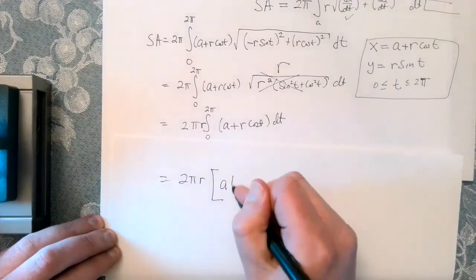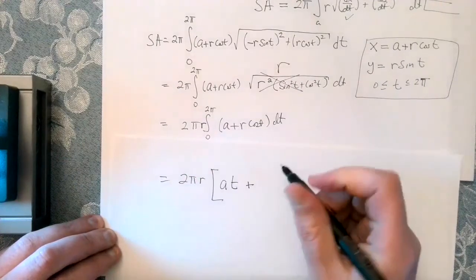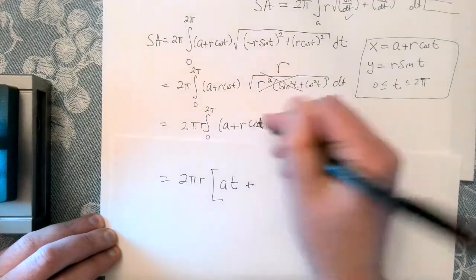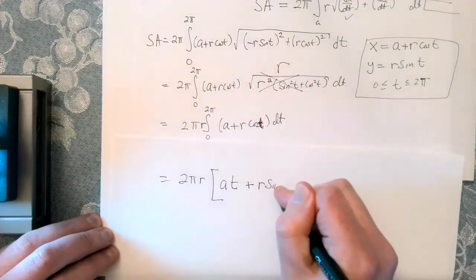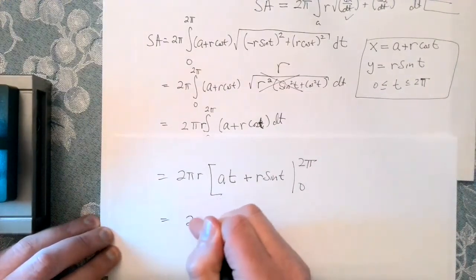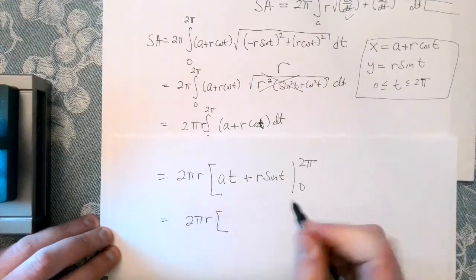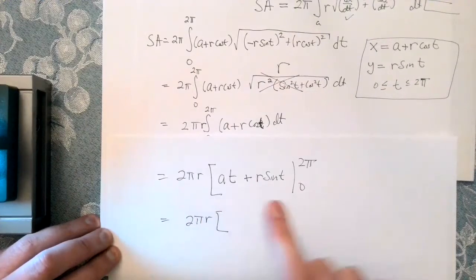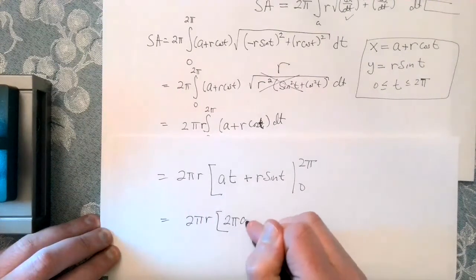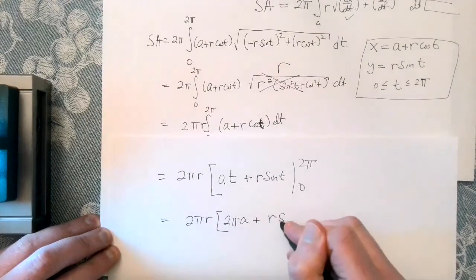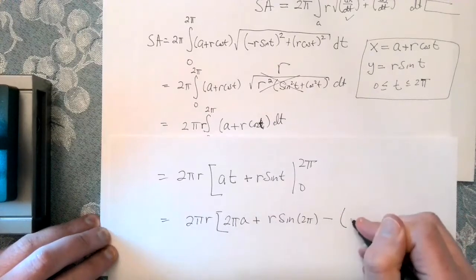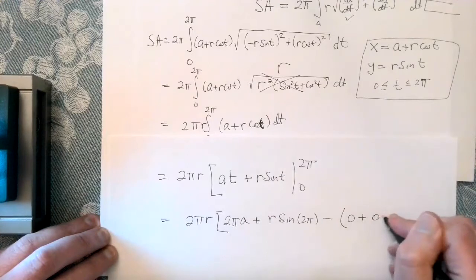So antiderivative of a is a t. And this is the antiderivative cosine of t. I know that looks like a theta, but that's actually a t. So that'll be r sine of t from 0 to 2 pi. So that looks like a times 2 pi plus r sine of 2 pi minus, it looks like 0 plus 0 sine of 0.